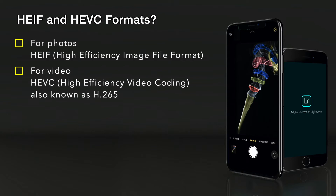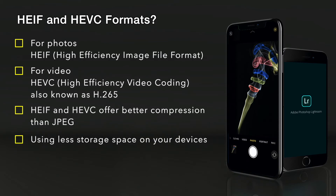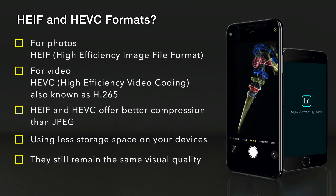The HEIF and the HEVC offer better compression than JPEG and H.264, so they use a lot less storage space on devices and particularly on iCloud Photos. But they still maintain the same visual quality.